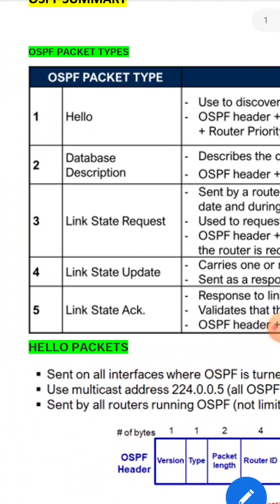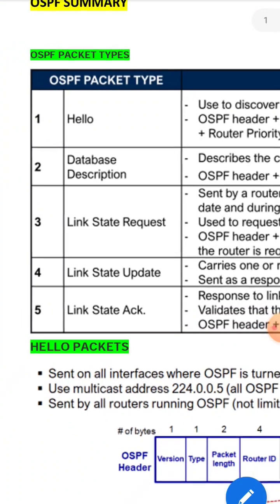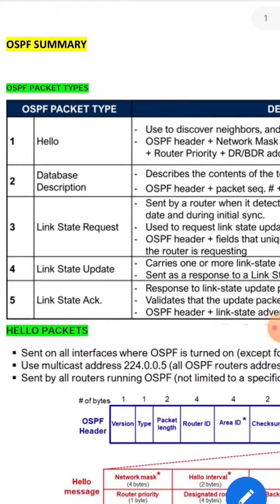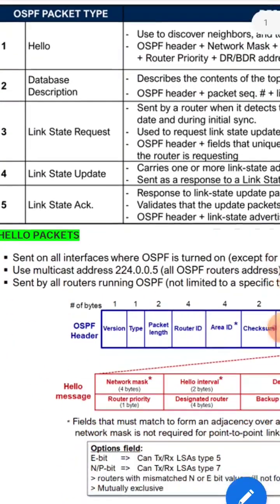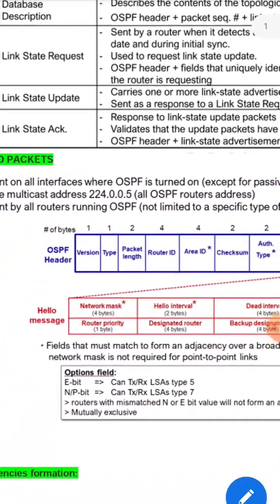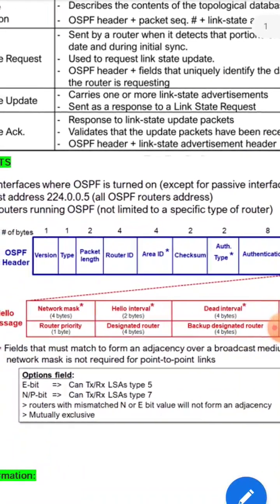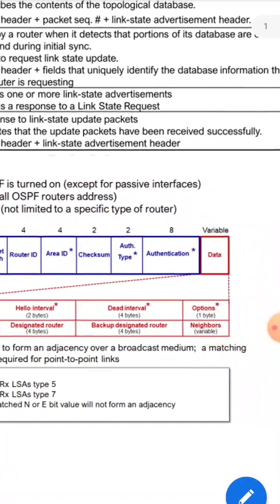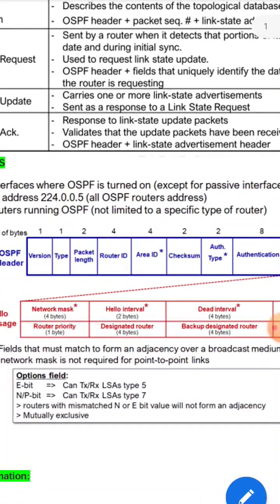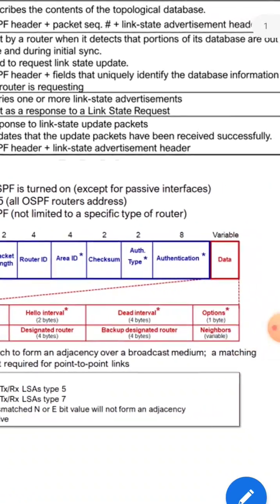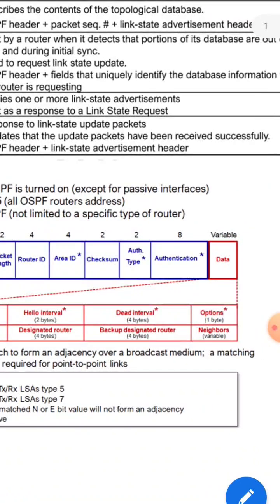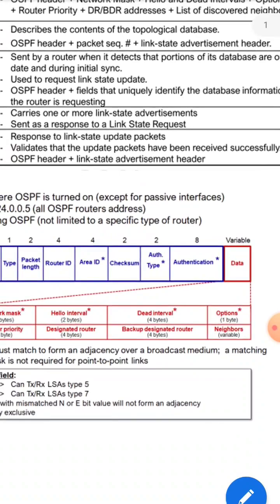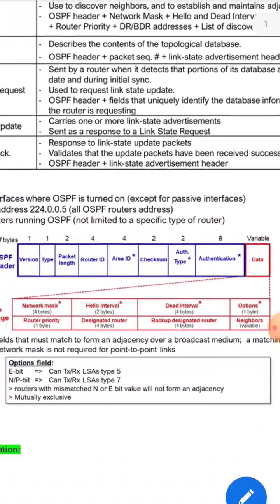A further subsequent question is going to be asked: what kind of information does the Hello packet carry when forming the OSPF neighborship? You have to clearly mention that the Hello message carries information such as network mask, Hello interval, dead interval, optional value, router priority, Designated Router (DR), Backup Designated Router (BDR), and neighbor information.